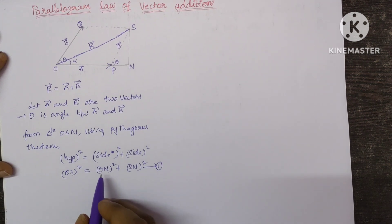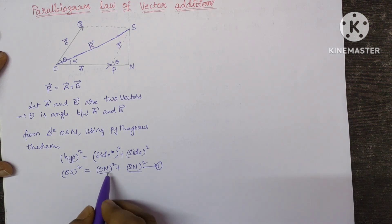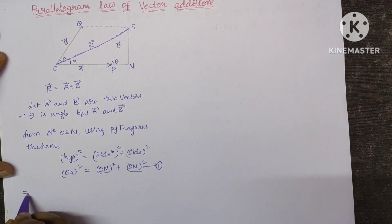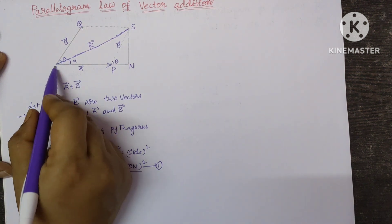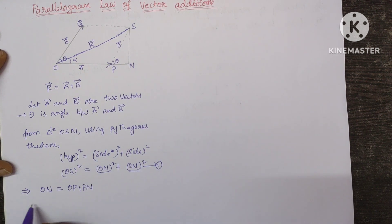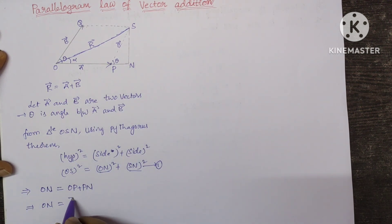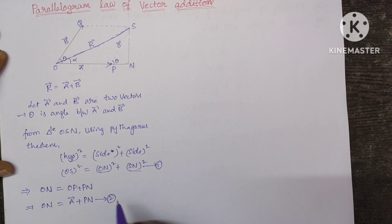Now we are going to find ON and SN separately, then substitute in equation 1. To find ON: ON is equal to OP plus PN. ON = OP + PN. Now OP is nothing but vector A, so ON = A bar + PN. Let this be equation number 2.